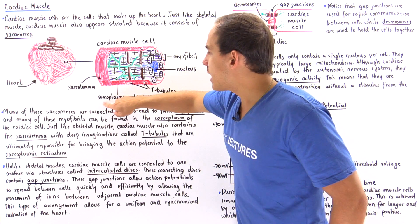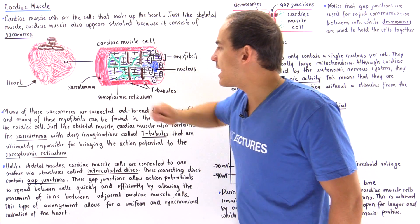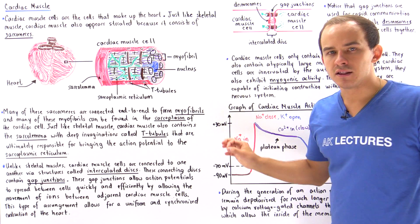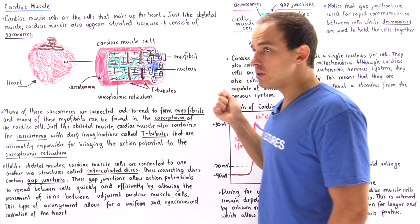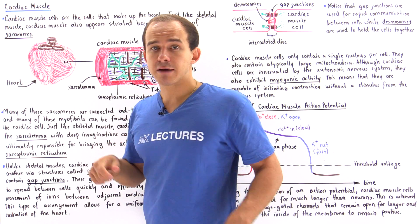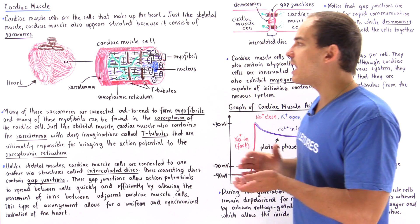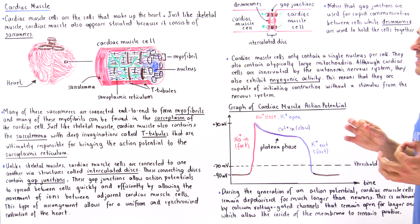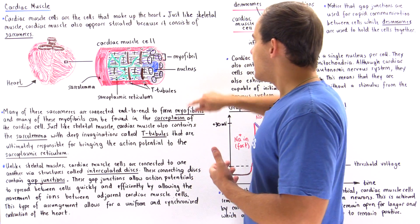We also have the green section, which is the sarcoplasmic reticulum. That is the specialized type of endoplasmic reticulum inside the cardiac muscle cell that contains a high concentration of calcium needed for proper muscle contraction.